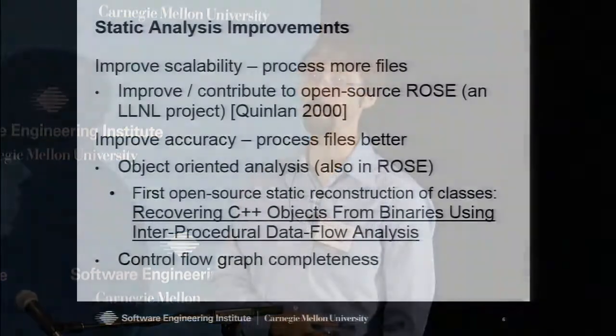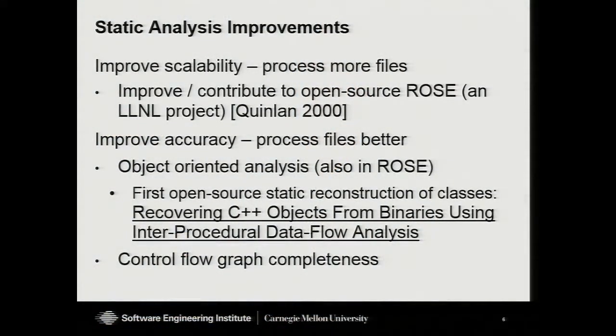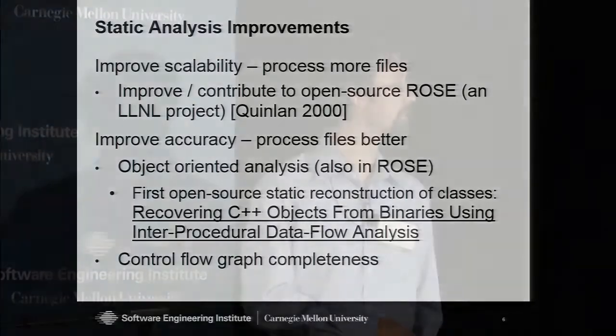I'm going to talk about improvements we've made to all three of those areas. For static analysis improvements, we have worked with the folks at Lawrence Livermore National Laboratory to improve and contribute to the software analysis library called ROSE, which is open source. This paper that's underlined reflects improvements delivered into ROSE. In particular, we were improving accuracy, since many malicious software authors are now writing object-oriented code. Existing commercial detection libraries like IDA Pro don't really handle object-oriented code very well, so we wrote software to recover the objects so you can figure out what the code is doing.